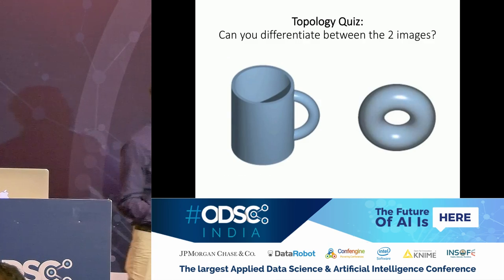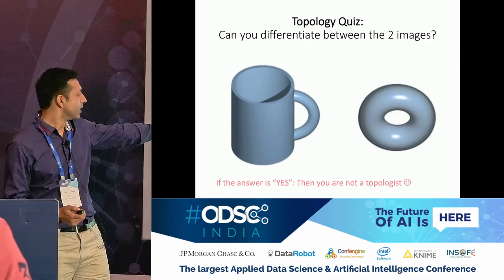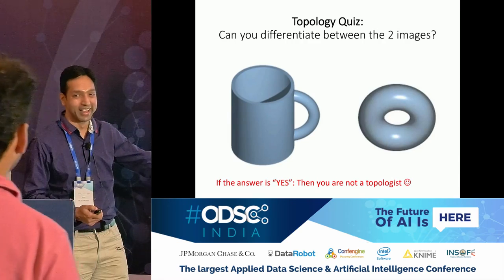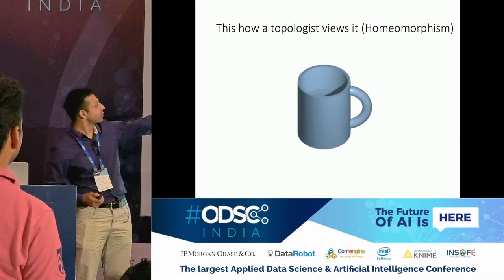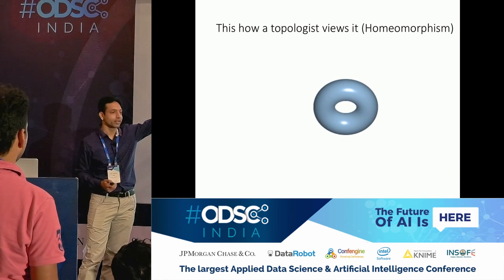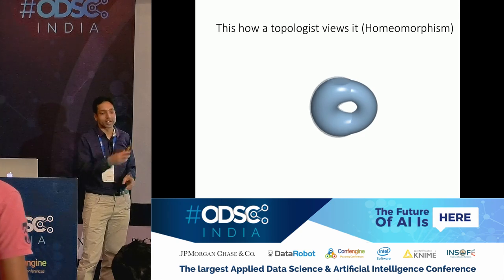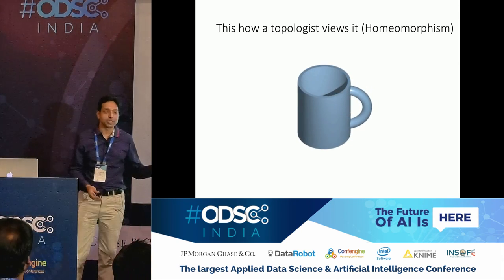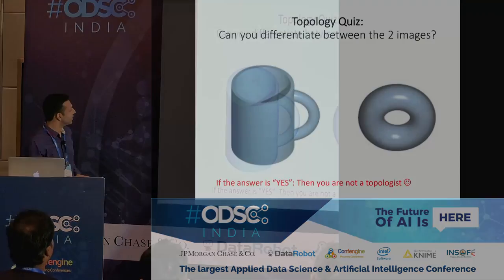One final quiz question: can you differentiate the two images — a coffee mug and a torus? If you can see the difference, then you're not a topologist. The coffee mug and the torus are homeomorphic — they are topologically equivalent. That's a simple mathematical joke to close.